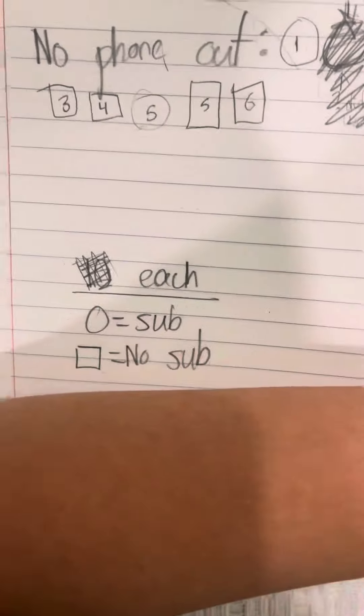So we got 16 squares for phone out and 8 circles. So that's 24 in total. 8 out of 24 people with their phone out subscribed.